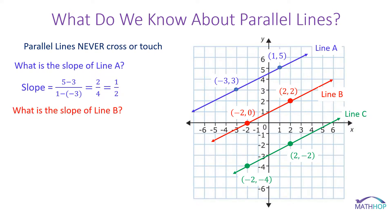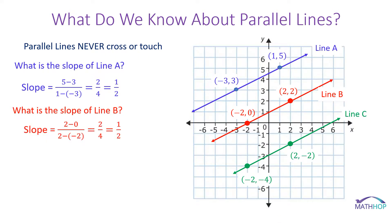What is the slope of line B? We could use the coordinates: 2 minus 0 divided by 2 minus negative 2, or we can look at our rise up 1 and our run to the right 2, giving us again a slope of 1/2.